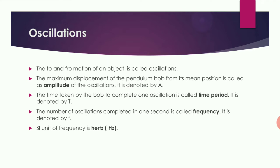Next, time period. The time taken by the pendulum bob to complete one oscillation is called the time period. It is denoted by the letter T.